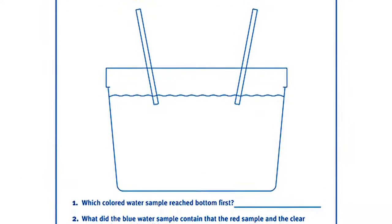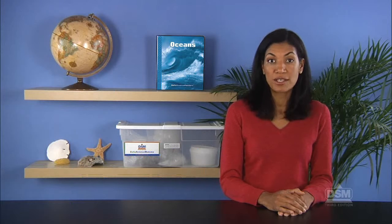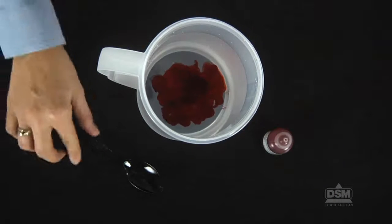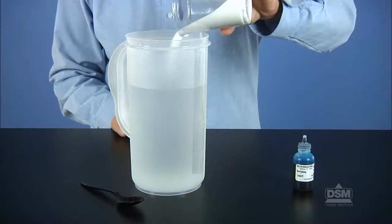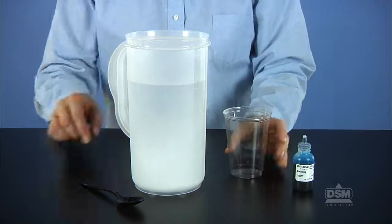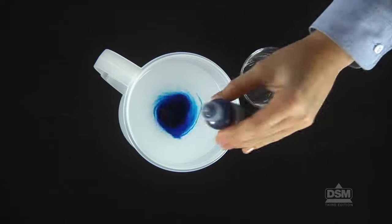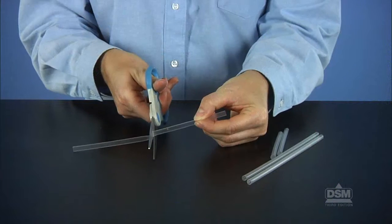To prepare for Session 1, make a copy of Activity Sheet 8, Part A for each student. Fill a pitcher with about 6 cups of tap water and add enough red food coloring to turn the water bright red. Fill a second pitcher with 6 cups of tap water, add half a plastic cupful of table salt, and stir until the salt crystals dissolve. Add blue food coloring to this pitcher. Place the pitchers of water and a roll of paper towels at a distribution station, then cut the straws in half.